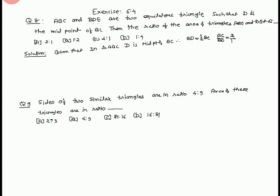Now triangle ABC is similar to triangle BDE because equilateral triangles are always similar. Therefore area of ABC upon area of BDE equal to BC upon BD whole square.